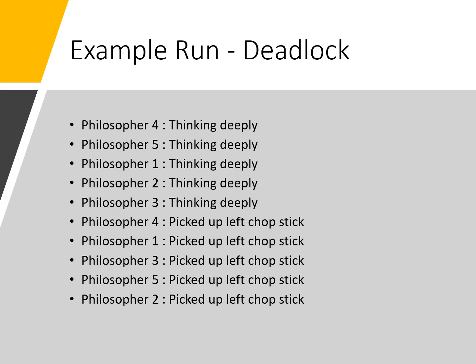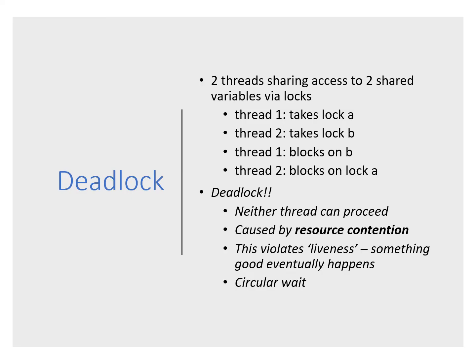This is a general problem known as deadlock: when two or more threads are sharing access to shared variables via locks. Thread one takes lock A, thread two takes lock B. Then thread one wants object B but is blocked because thread two holds it, and thread two wants object A but is blocked because thread one holds it. This is called a deadly embrace or deadlock — neither thread can continue and the system stalls.